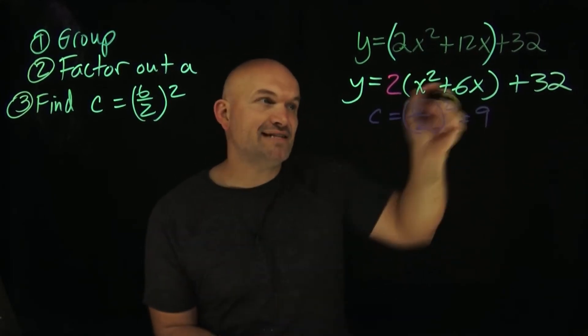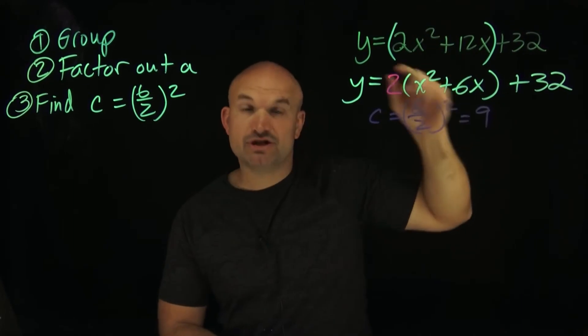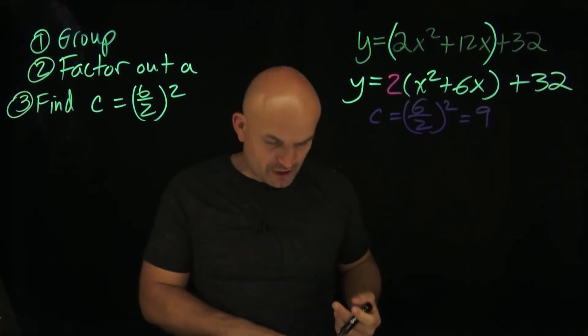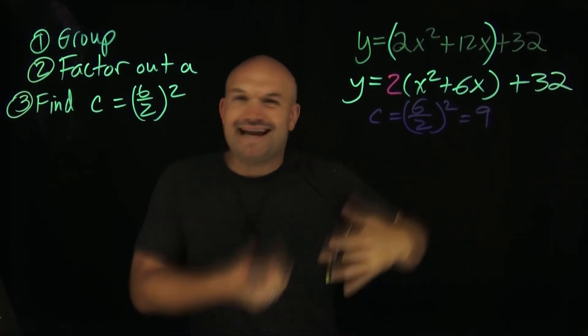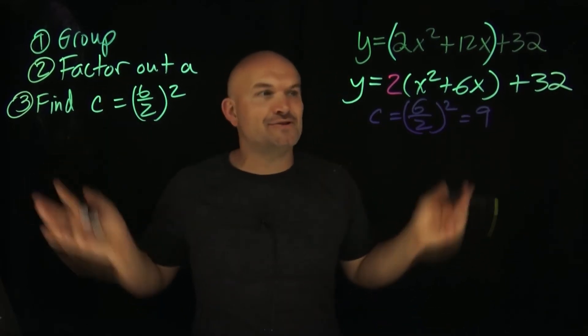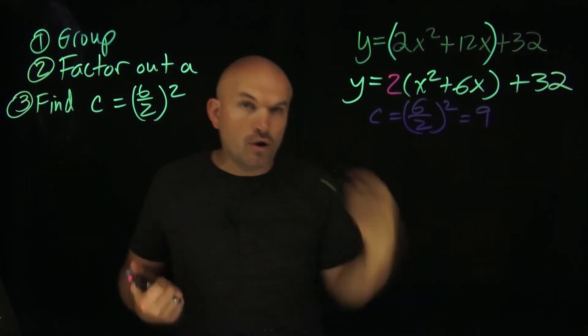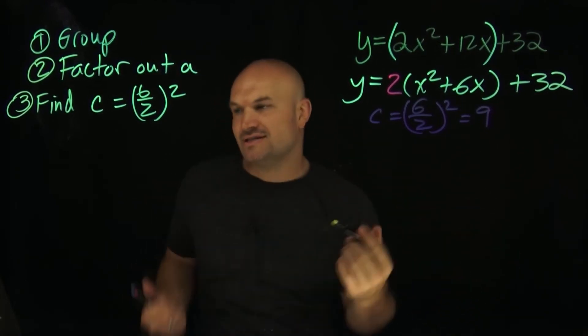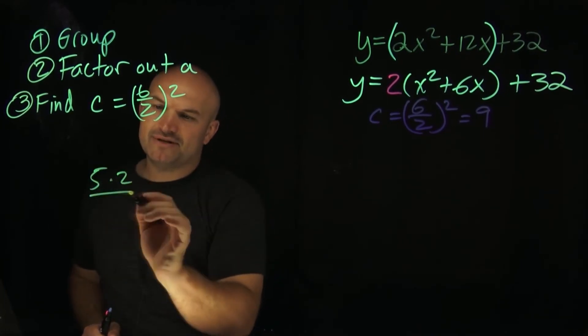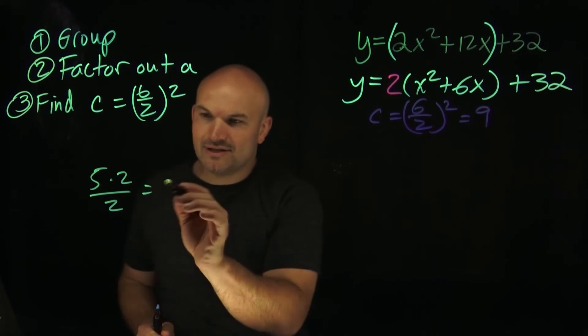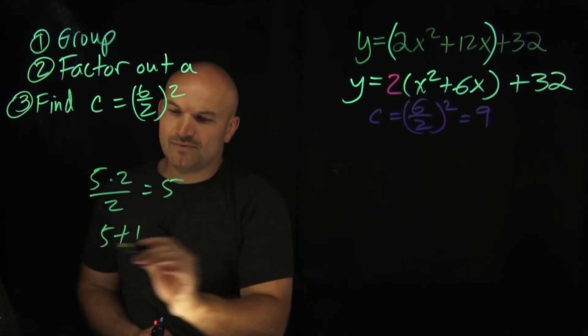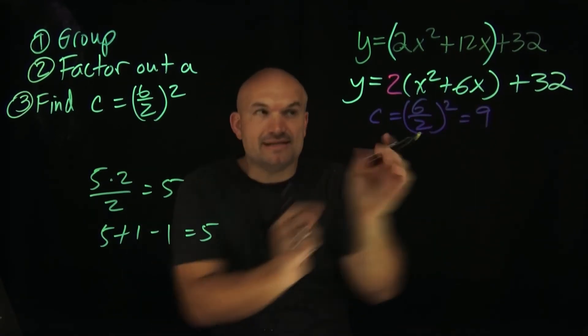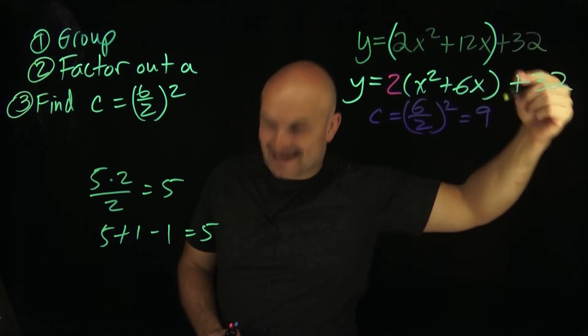So now that we figured out our value C, what we need to do is add the C inside of our parenthesis, which is going to create the perfect square polynomial, as well as subtract it outside the parenthesis, because we have to produce what we call equivalent equations. You just can't add a number to an equation. Whatever you do on one side, you have to do on the other side, or you could just add and subtract it, because adding and subtracting are inverse operations. If I'm going to add a 9, even though it's inside the parenthesis, I just have to make sure I subtract the 9 outside the parenthesis.